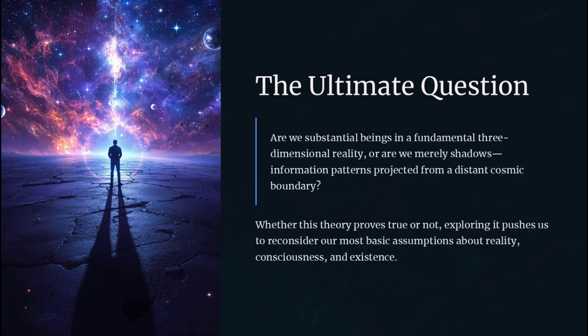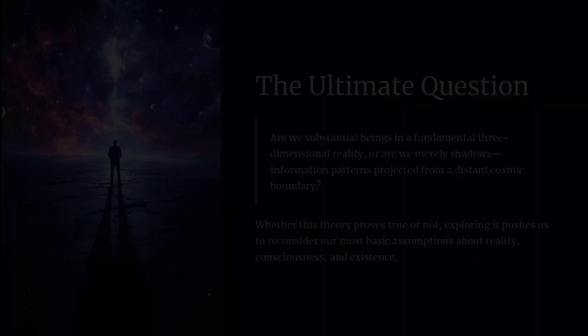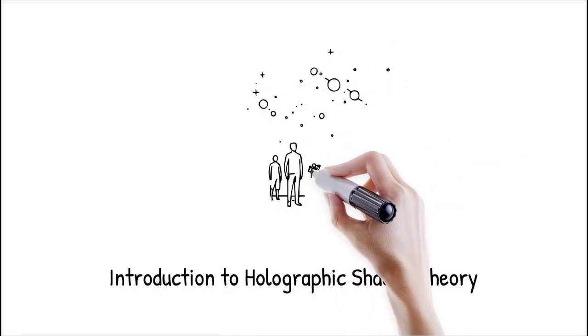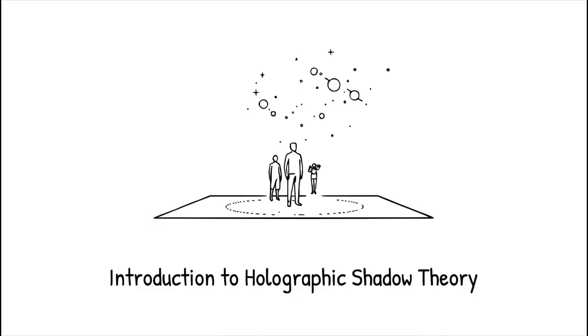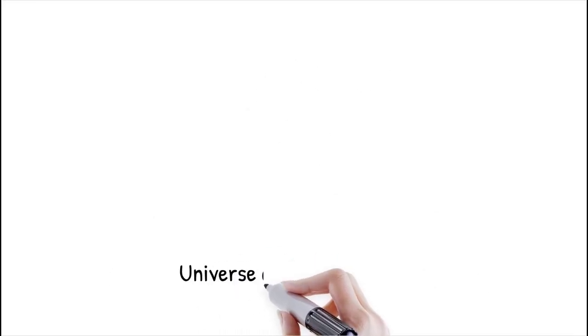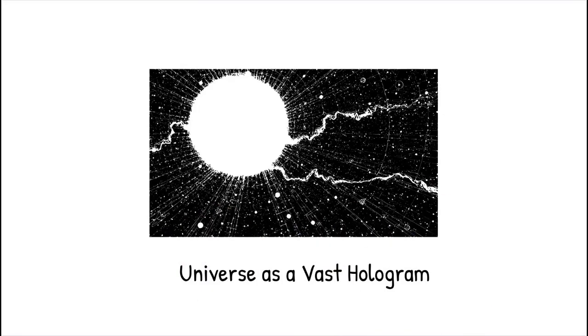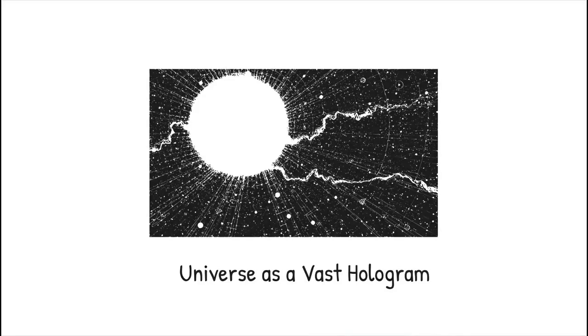The holographic shadow theory proposes that everything we experience in three dimensions, including our own bodies, is a projection of information encoded on a two-dimensional cosmic boundary. In this framework, the universe functions like a vast hologram, where the real data reside on the edge and manifest as three-dimensional phenomena. This challenges our everyday intuition that space and matter are intrinsically volumetric. It suggests that depth, solidity, and even biological processes are emergent illusions cast from the universe's perimeter.